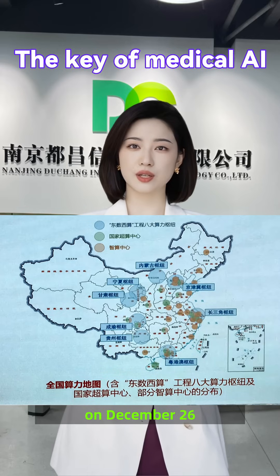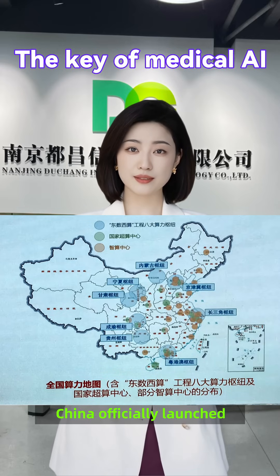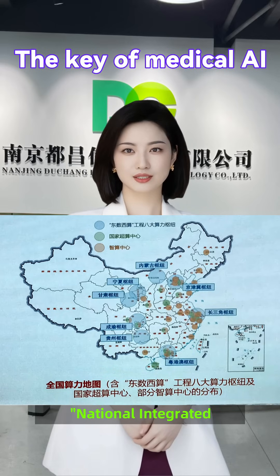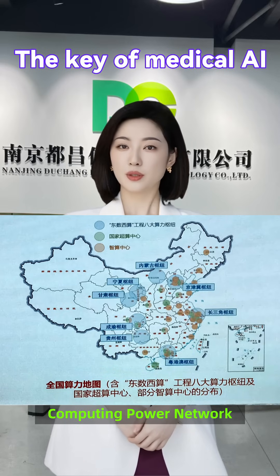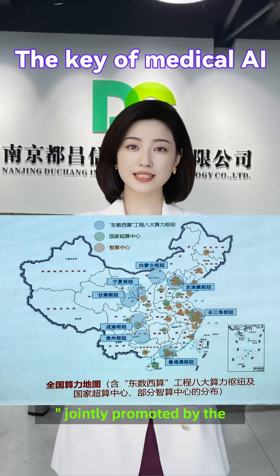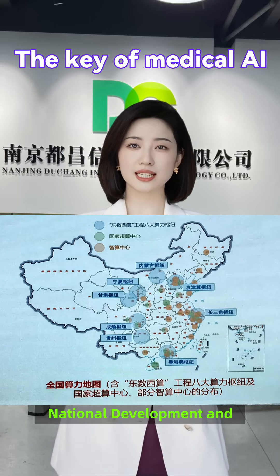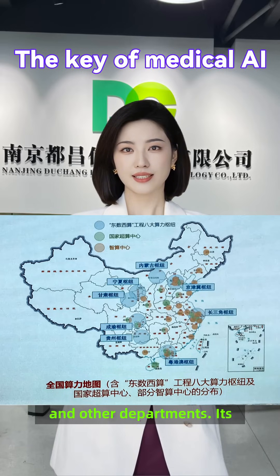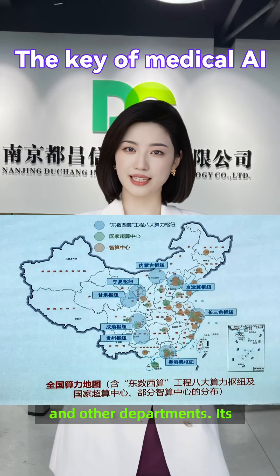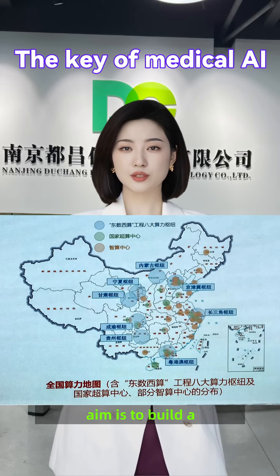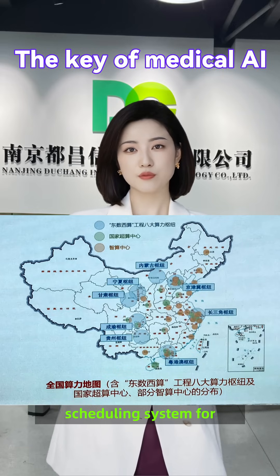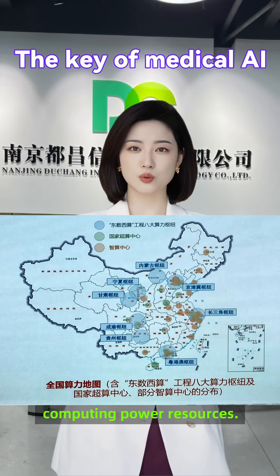To address this, on December 26, 2023, China officially launched the construction of the National Integrated Computing Power Network, jointly promoted by the National Development and Reform Commission, the National Data Administration, and other departments. Its aim is to build a nation-wide collaborative scheduling system for computing power resources.